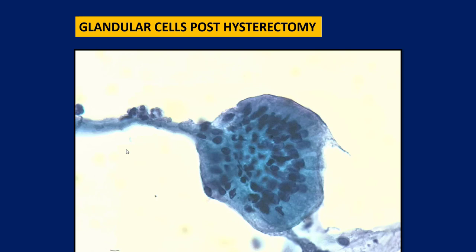After hysterectomy, glandular cells are not expected, but sometimes endocervical glandular metaplasia can occur in the vaginal cuff and these cells appear on the vaginal smear looking like normal endocervical glandular cells. There is nothing to worry about unless glandular abnormalities are present in these cells, in which case the same reporting criteria apply.